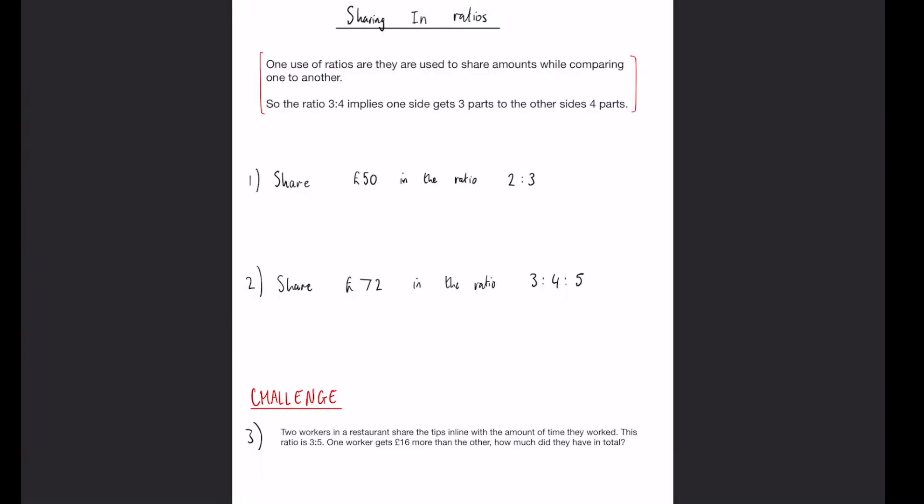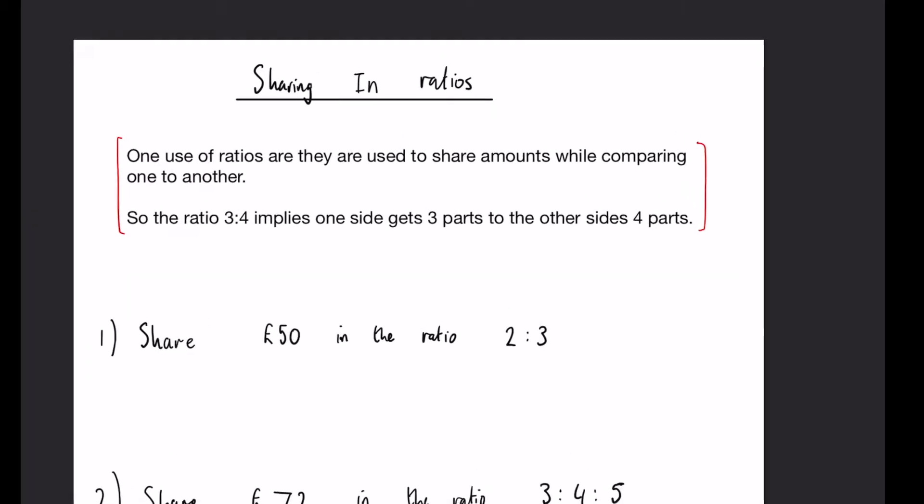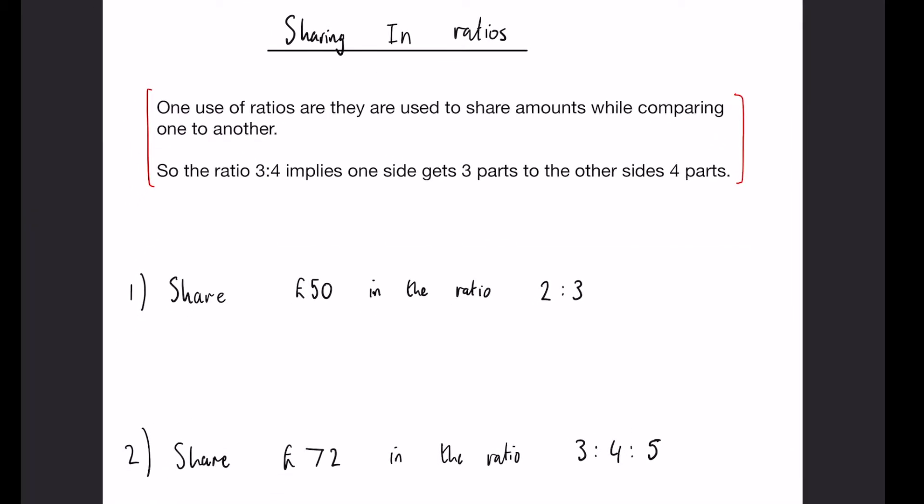In this video we will be looking at sharing values within ratios. One use of ratios is that they are used to share amounts while comparing one to another. So the ratio 3:4 implies that one side gets 3 parts to the other side's 4 parts.